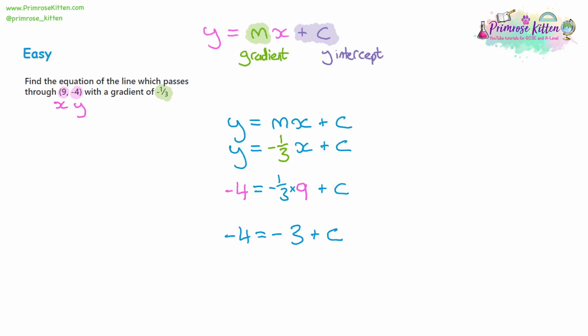So we can solve the equation. We want c on its own — it's got negative three with it, so we add three to both sides. Negative four plus three gives us negative one; the negative three cancels out. So the y-intercept is at negative one. The final equation is y equals negative a third x take away one.